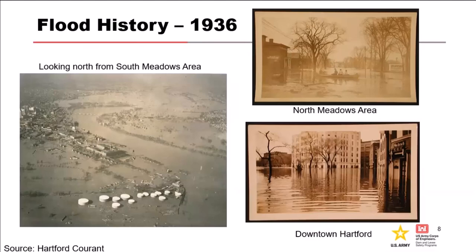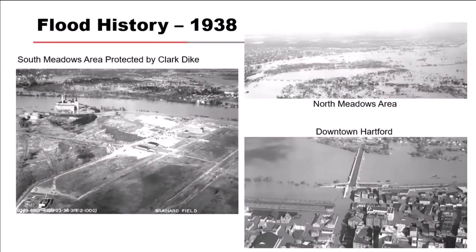Here's the 1938 flood. The levee would have been constructed along here — you can see that the land side is flooded. The South Meadows levee now exists through here, and the North Meadows levee goes through this area. Downtown Hartford is flooded in this photo, and the levee system now runs through here.